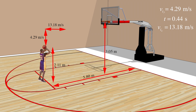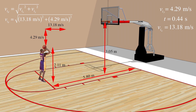Now we can find the initial velocity at which Dwight throws the ball in the diagonal direction. We can use the Pythagorean theorem to find this value. After plugging in our values and solving, we come to the conclusion that the velocity in the diagonal direction is 13.86 meters per second.